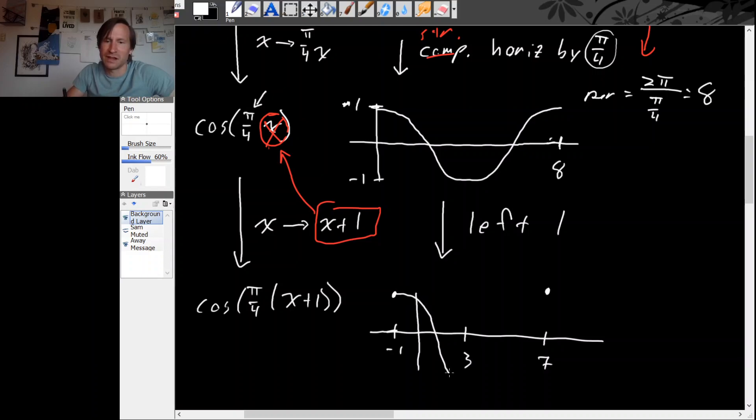And then halfway through, I guess, is going to be at 3. So something like this. Not my best work, but you get the idea. And again, it's going up and down between 1 and minus 1. All right, so that's the right way to do it.